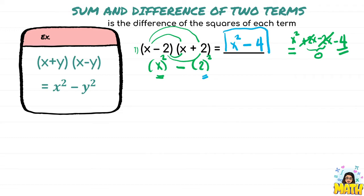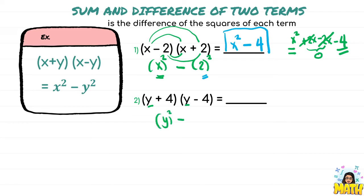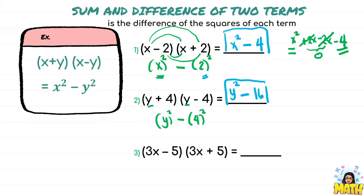This method is only applicable for the sum and difference of two terms. You must examine that the first terms are the same as well as the last terms. The technique is to square the first term minus the square of the last term. For example, we get y squared minus 4 squared, which is 16. Another example: the same first terms 3x and the same last terms 5, so we square 3x to get 9x squared, minus 5 squared, which is 25.